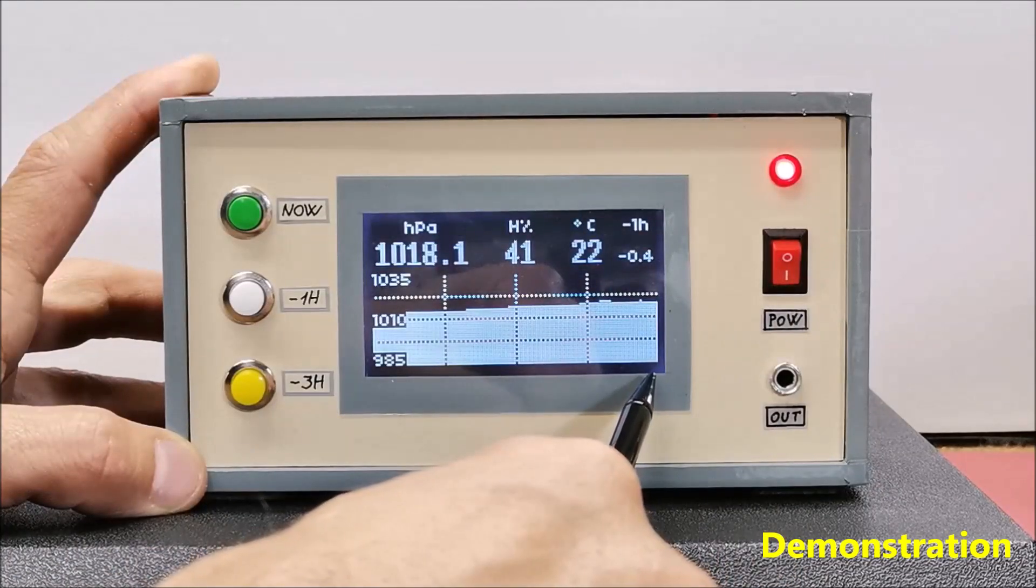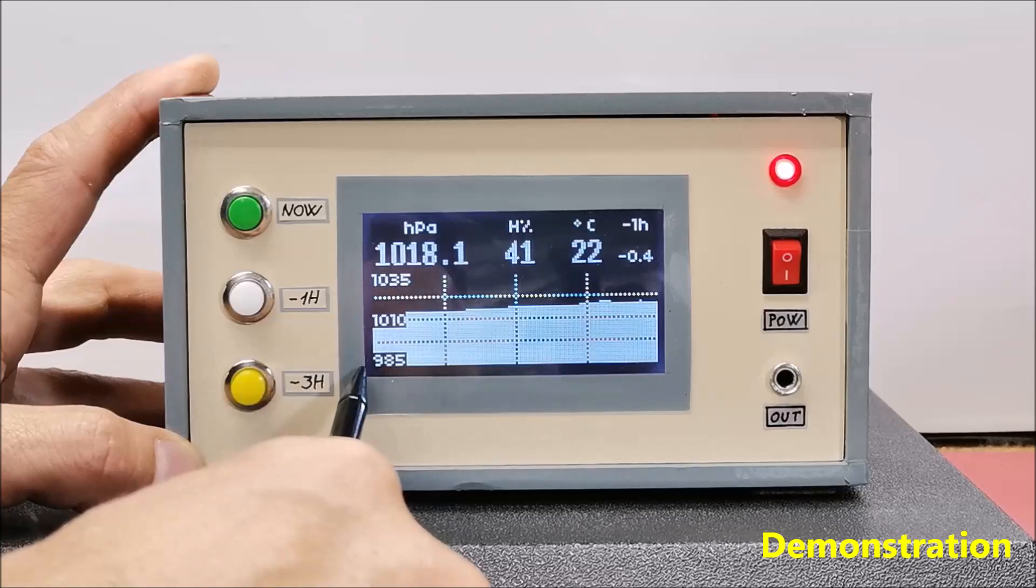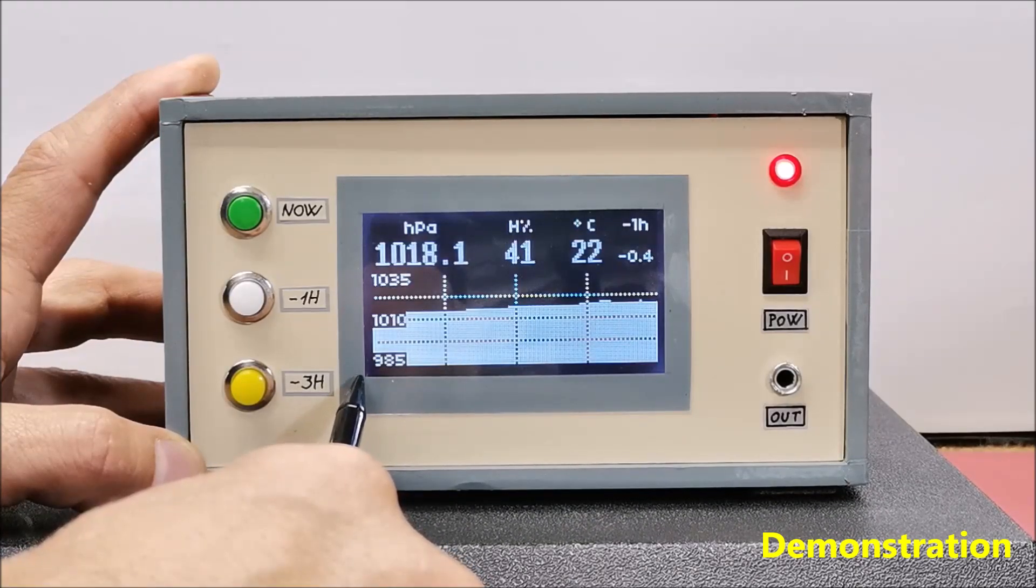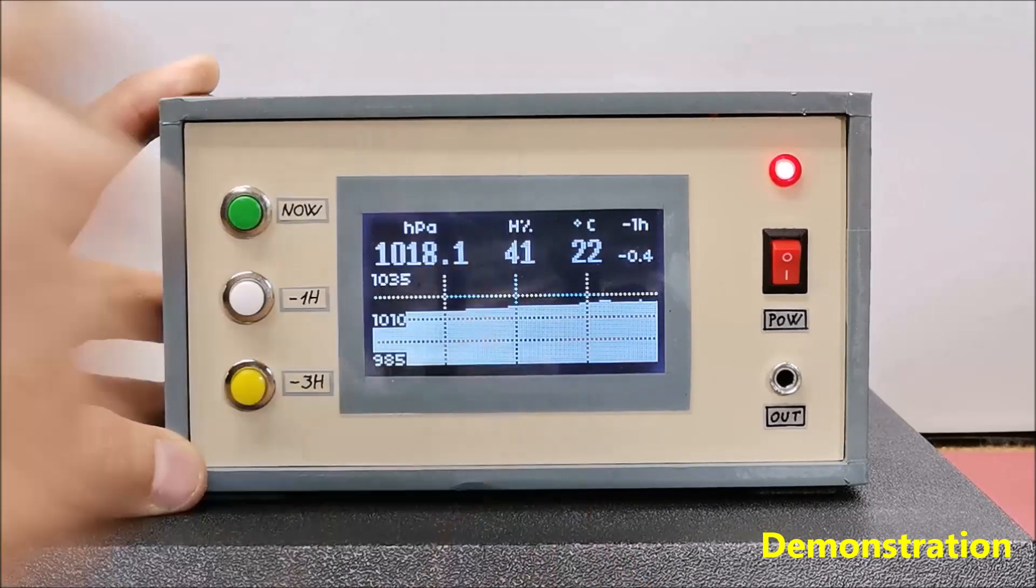This means that the value of atmospheric pressure on the graph is recorded every 11.25 minutes. On the right side are the latest measurements and on the far left are the oldest measurements, in this case minus 24 hours.